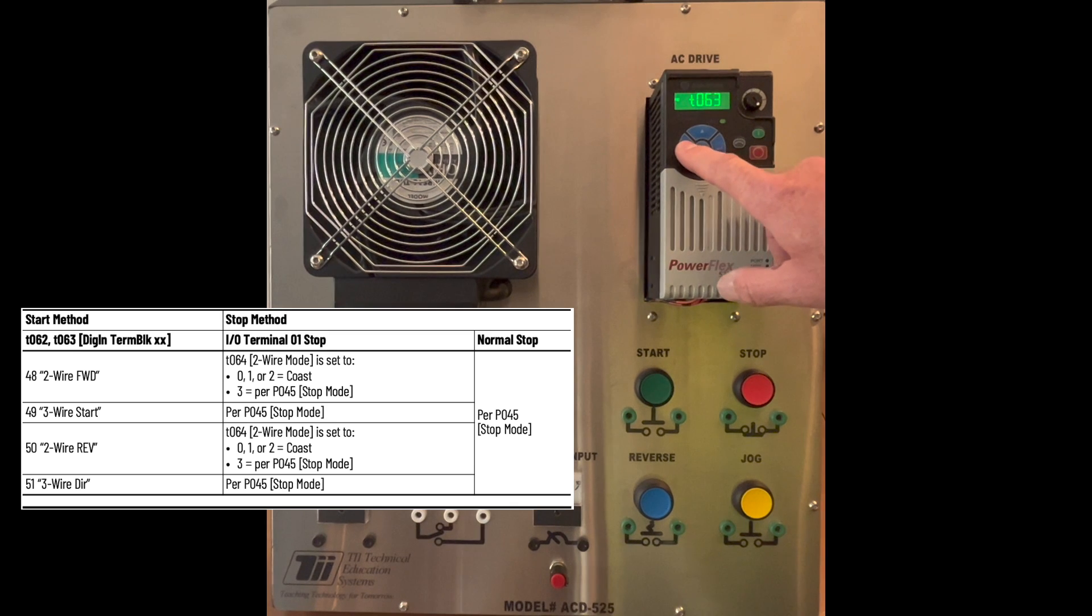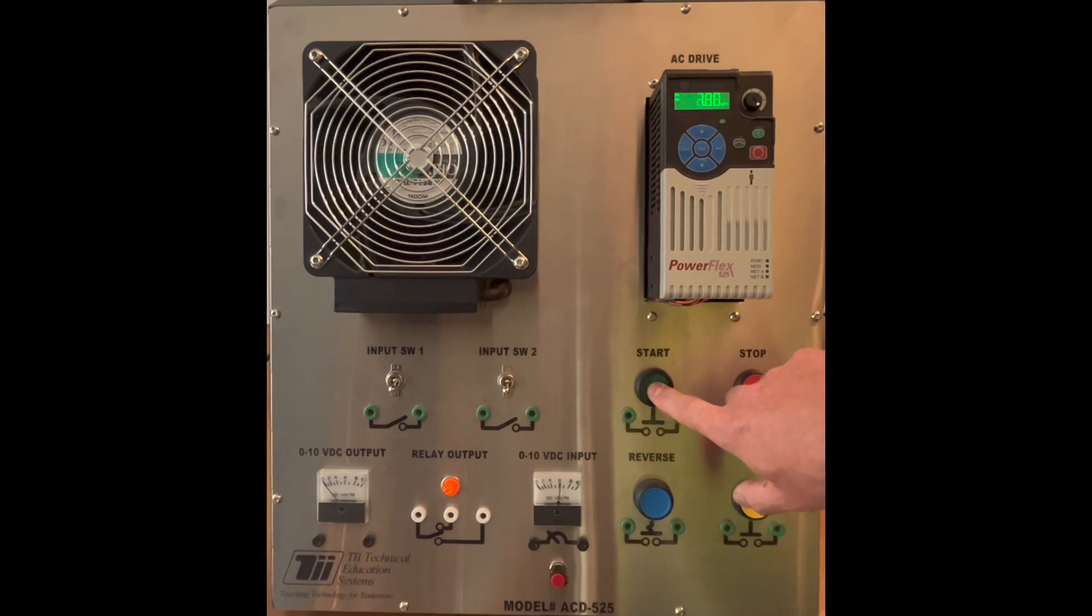And now we're going to see if this works. Activate the start button. The motor begins spinning, and it ramps up to the frequency that you have your keypad potentiometer set to. I can control the speed here, and notice it's just running, and I'm not pressing anything. That's why we know it's not two-wire control. Activate the stop button. That shuts it down.